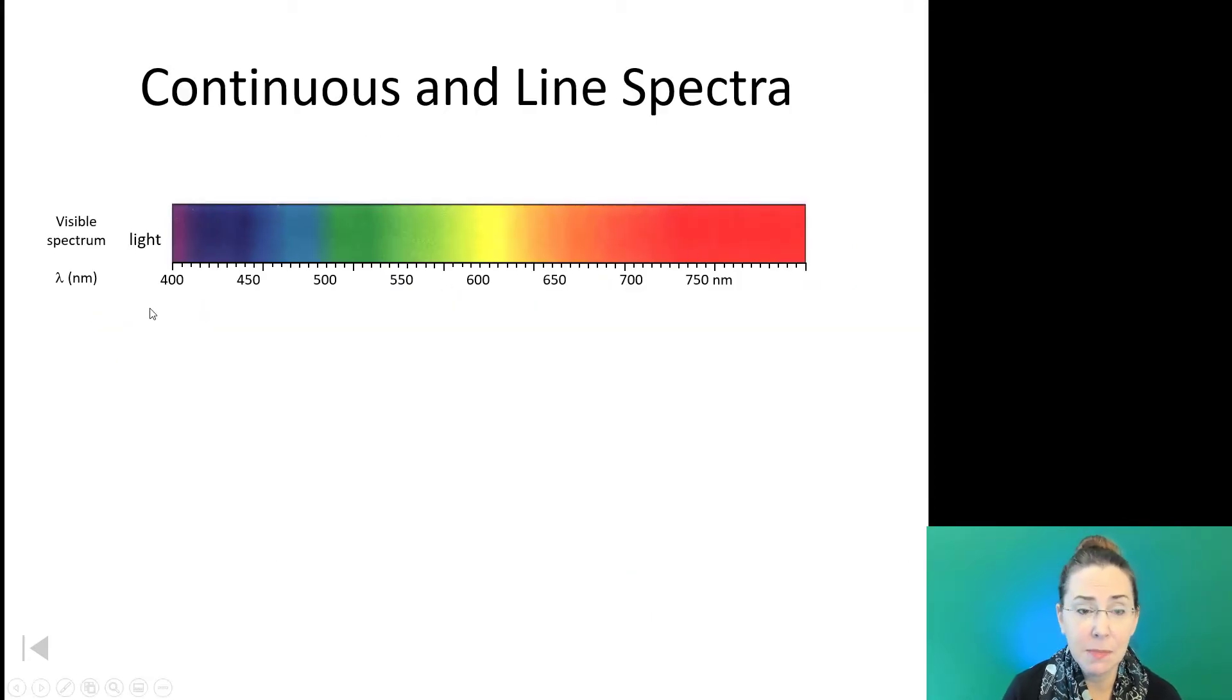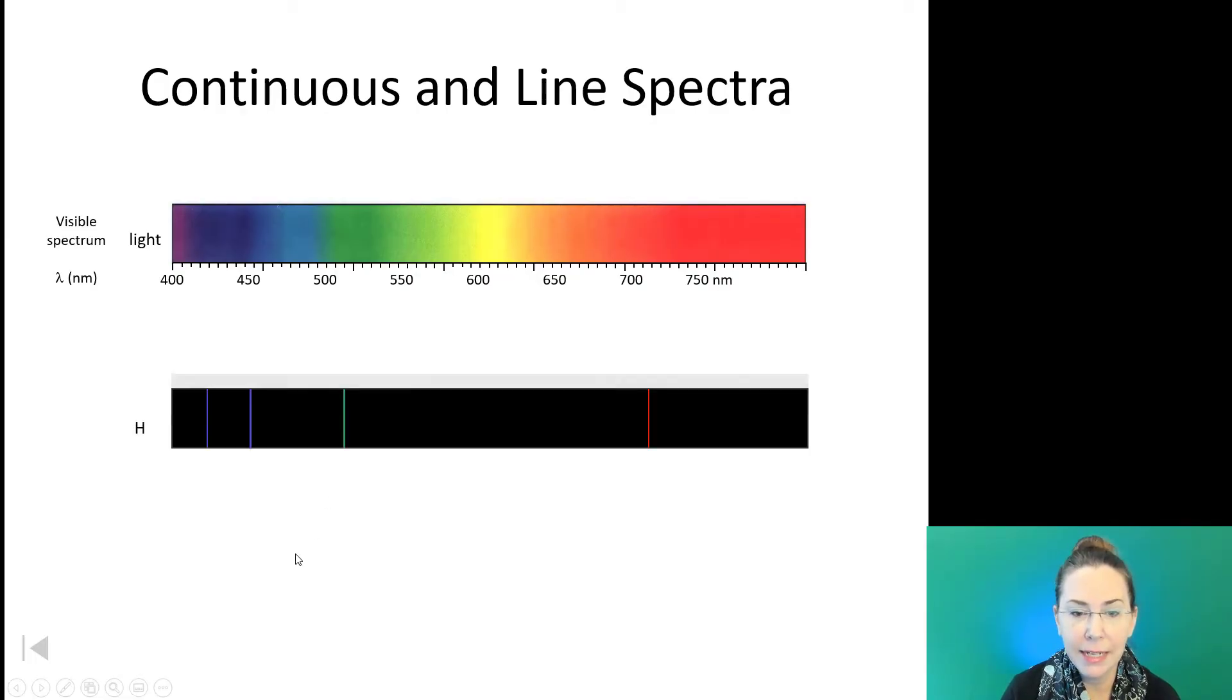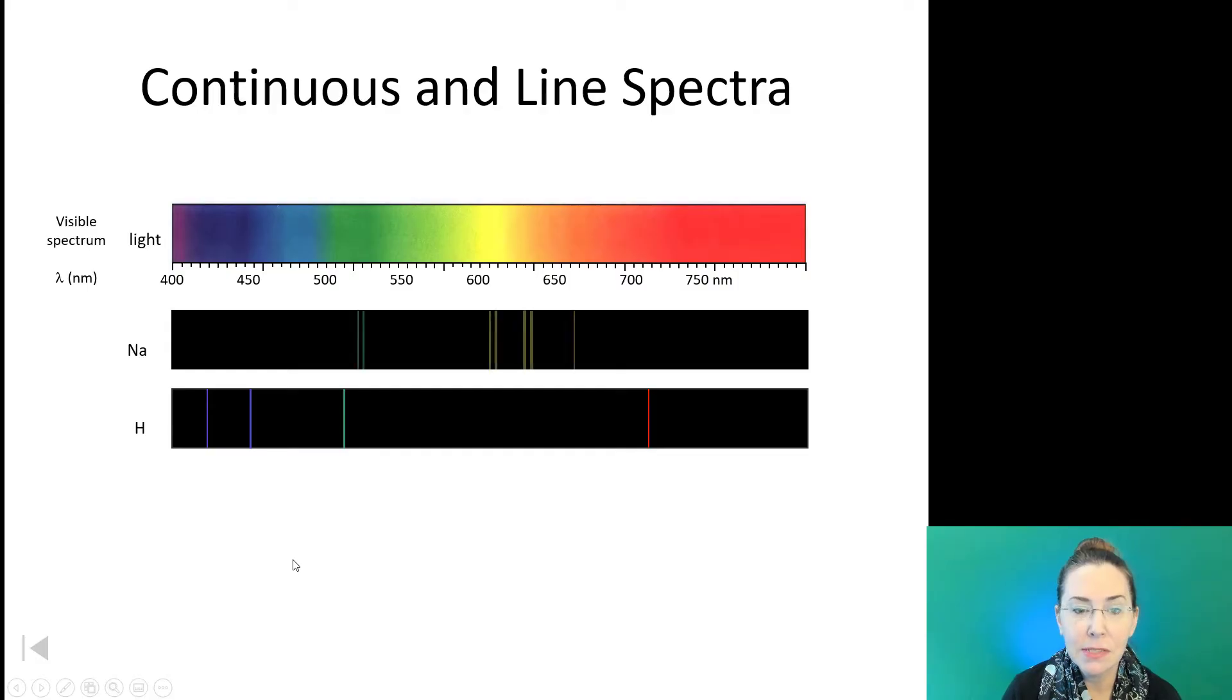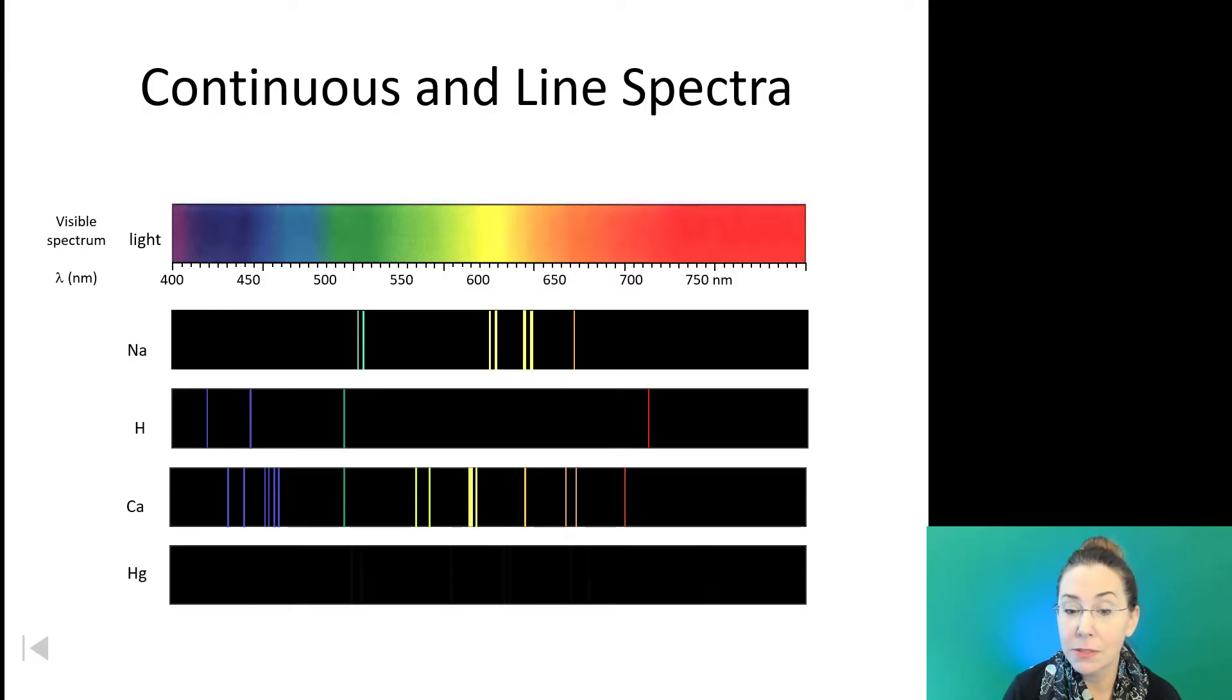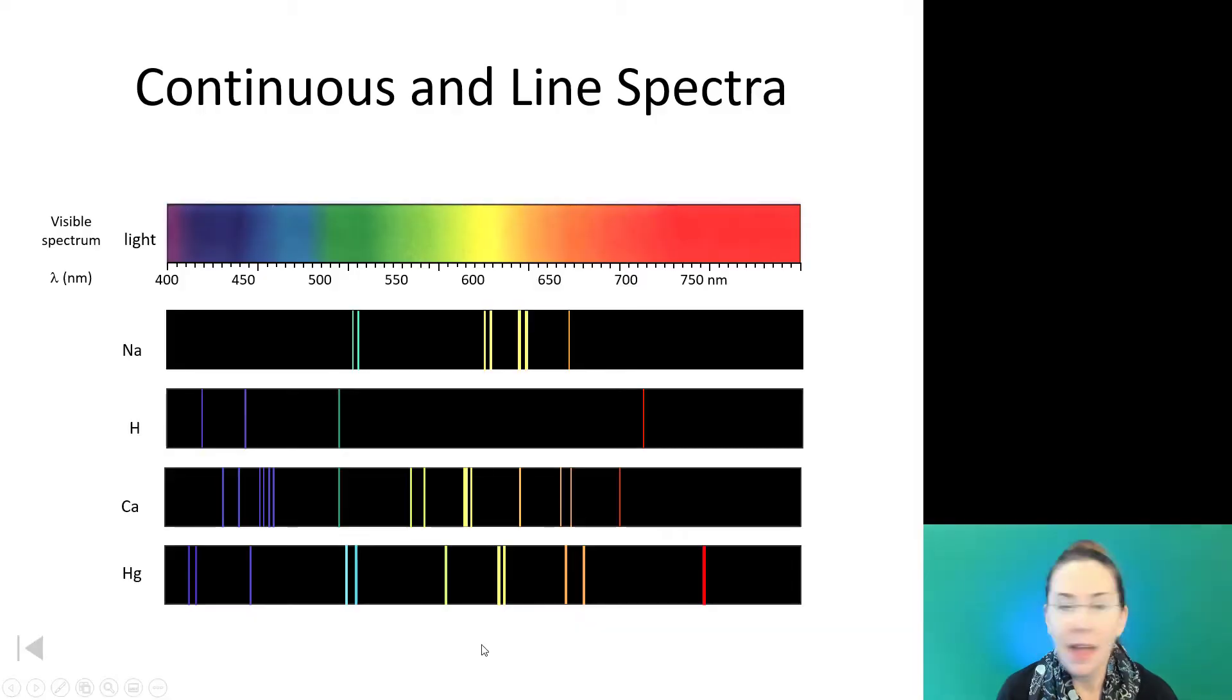We also have continuous line spectra. Here, this is the full visible range of light, but when we look at hydrogen, we only see a few bands. Sodium, we see many more. There are more electrons involved. In calcium, we have even more bands, and these are once again specific for every individual element. Here's mercury. We can see we've got a lot down here in the blue and green range, a few in the red and orange range. Every element has a unique set of bands that correspond to the specific wavelengths of light produced by its electrons when they get excited.